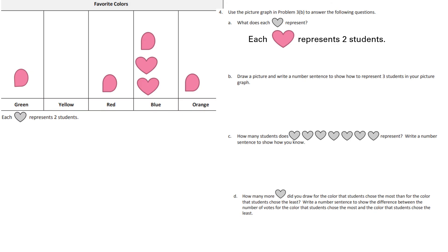Now we're going to do a few more word problems — these are our last problems for the lesson. Part A: what does each heart represent now? Each heart represents two students. Part B: draw a picture and write a number sentence to show how to represent three students in your picture graph. How would you show three? Part C: how many students does this many hearts represent? Count them yourself and write a number sentence to show how you know.